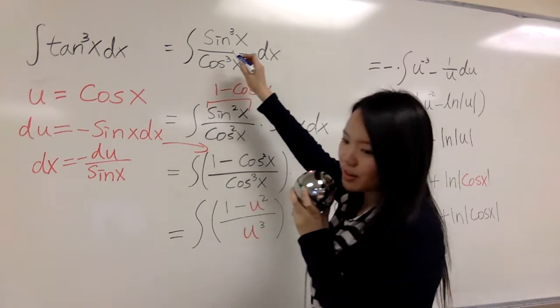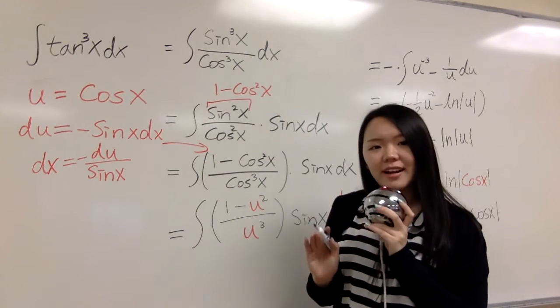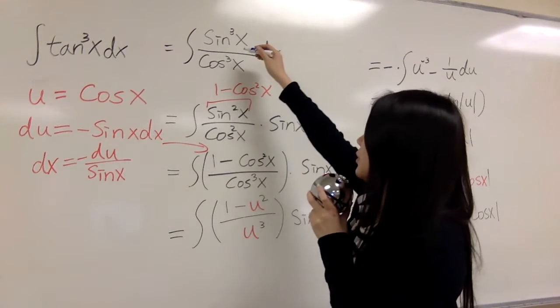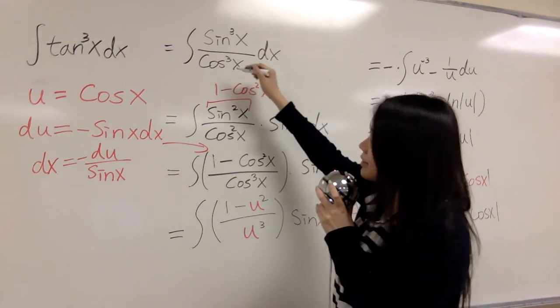First tangent equals sine x over cosine x. So tangent cubed x equals sine cubed x over cosine cubed x.